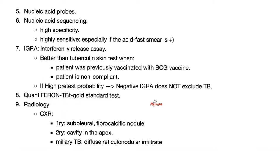Primary tuberculosis on chest X-ray appears in the middle or lower lobe — you see a subpleural fibrocalcific nodule. With secondary disease, you see cavitations at the apex of the lung. In disseminated miliary TB, it is spread all over the place.